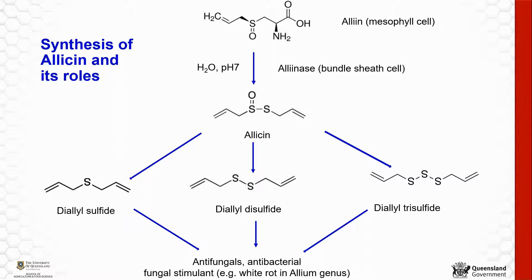Allicin is synthesized from alliin when garlic cloves are crushed. After synthesis, allicin transforms to diallyl sulfide, diallyl disulfide, or diallyl trisulfide. These compounds are well known for their antifungal and antibacterial properties.